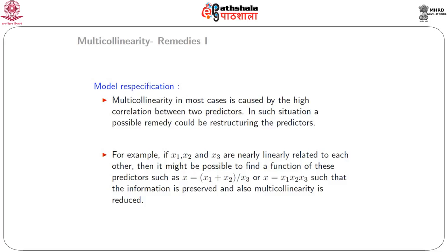The first method is model respecification. Multicollinearity in most cases is caused by the high correlation between two predictors, and a possible remedy could be restructuring the predictors. For example, if we are fitting a multiple regression model with three independent variables x1, x2, and x3, and these three variables are nearly linearly related, a researcher might find an appropriate function such that x equals (x2 + x1 + x2) / x3, or x equals x1 × x2 × x3, so that information about the three predictors is preserved and multicollinearity is reduced.